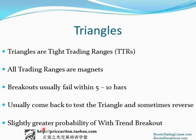There's a slightly greater probability of a with-trend breakout. So if you have a triangle in a bull trend, a triangle is a pretty neutral pattern — a breakout mode pattern — but with a slightly greater chance of it having a bull breakout. But it can end up being the final flag of the bull trend and come back into the triangle and continue down further, leading to a reversal.